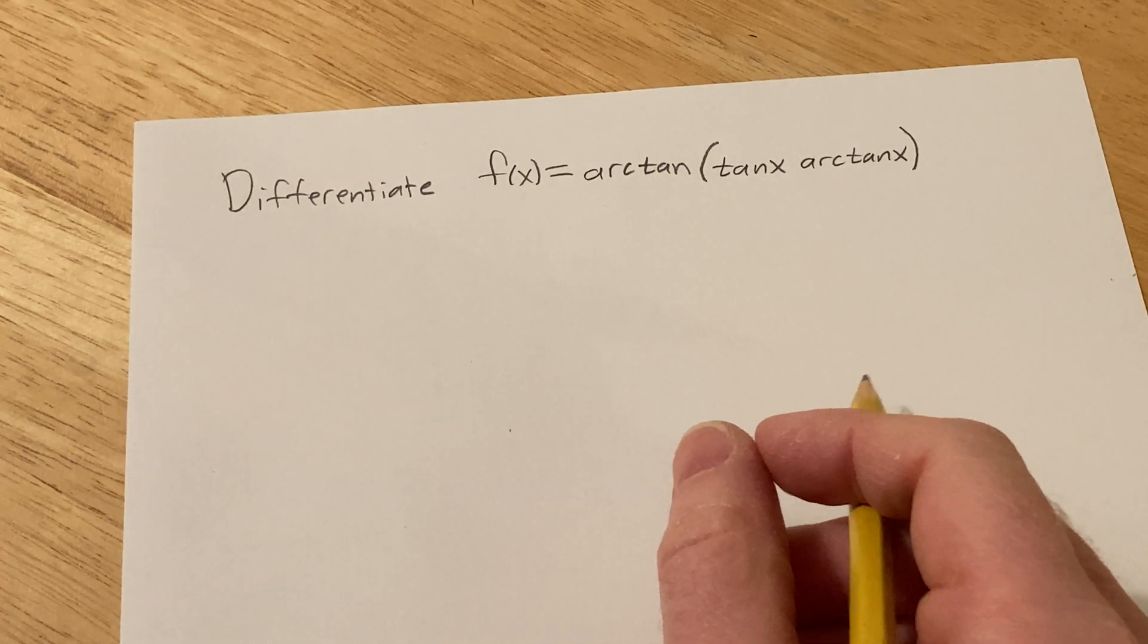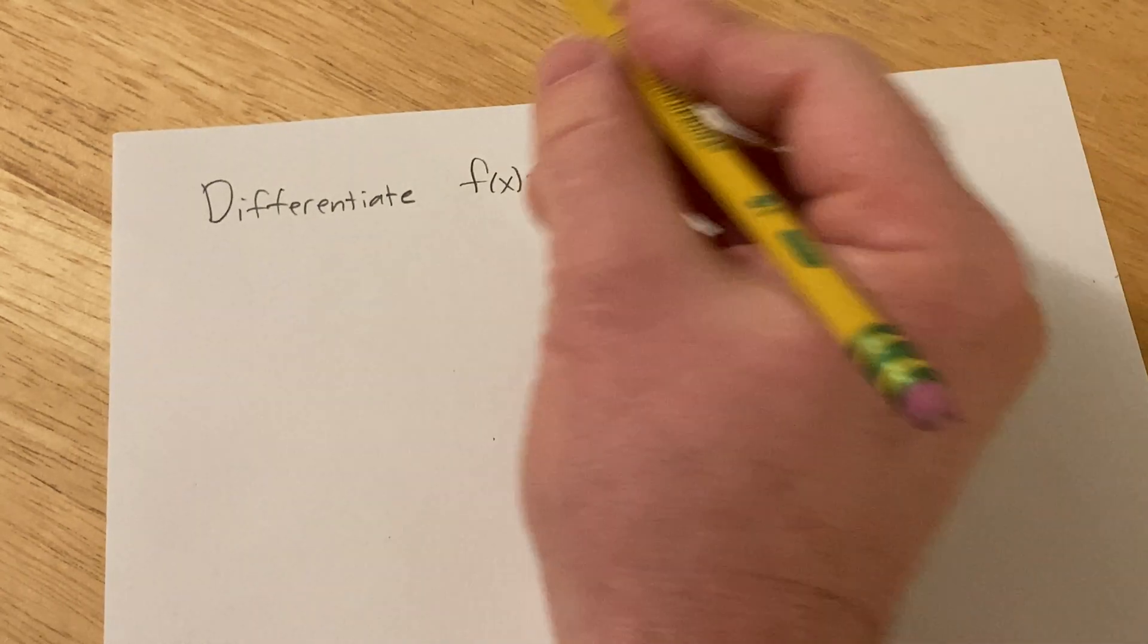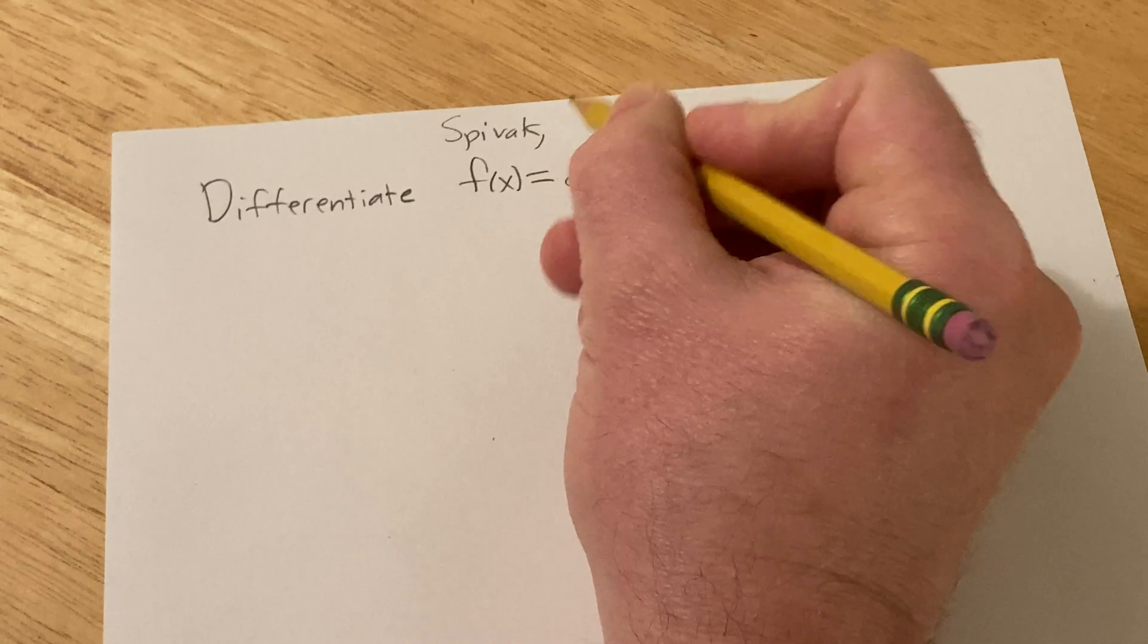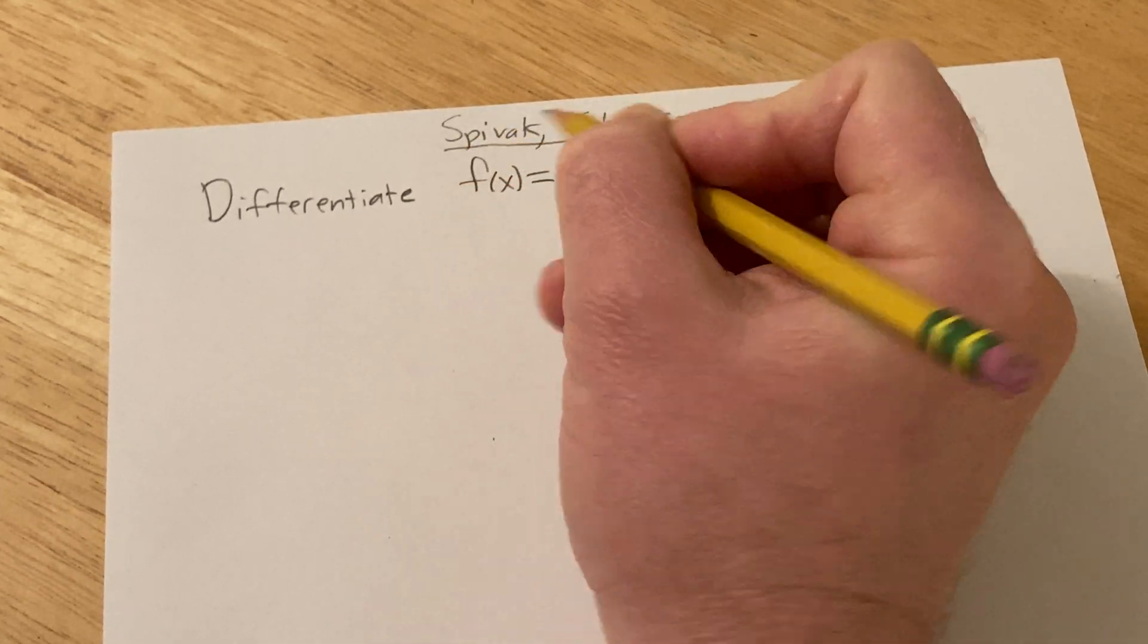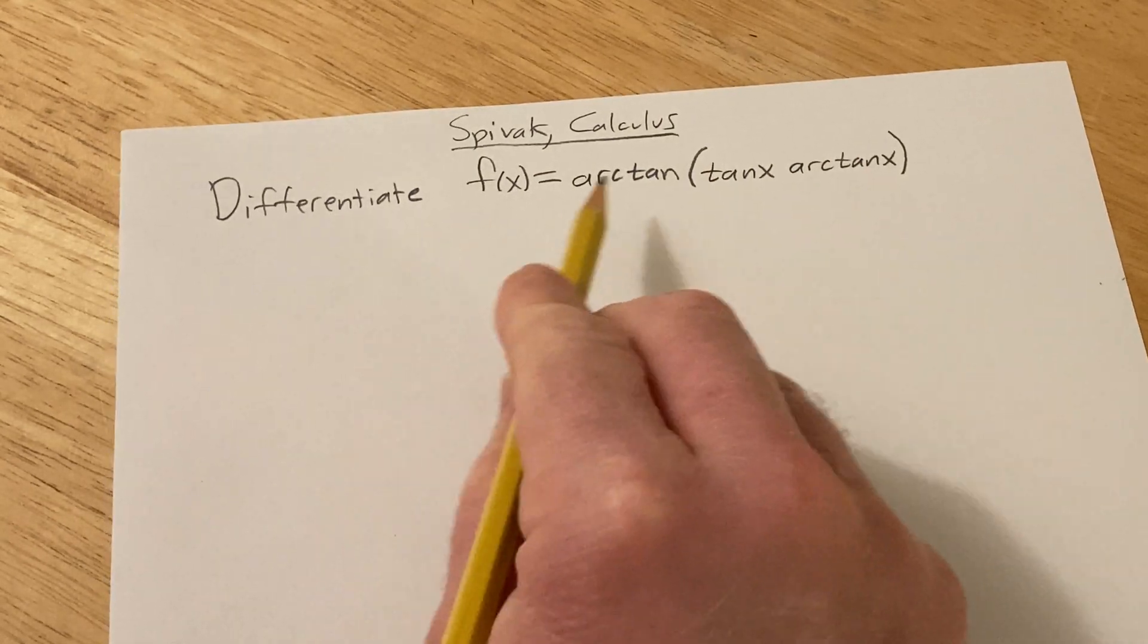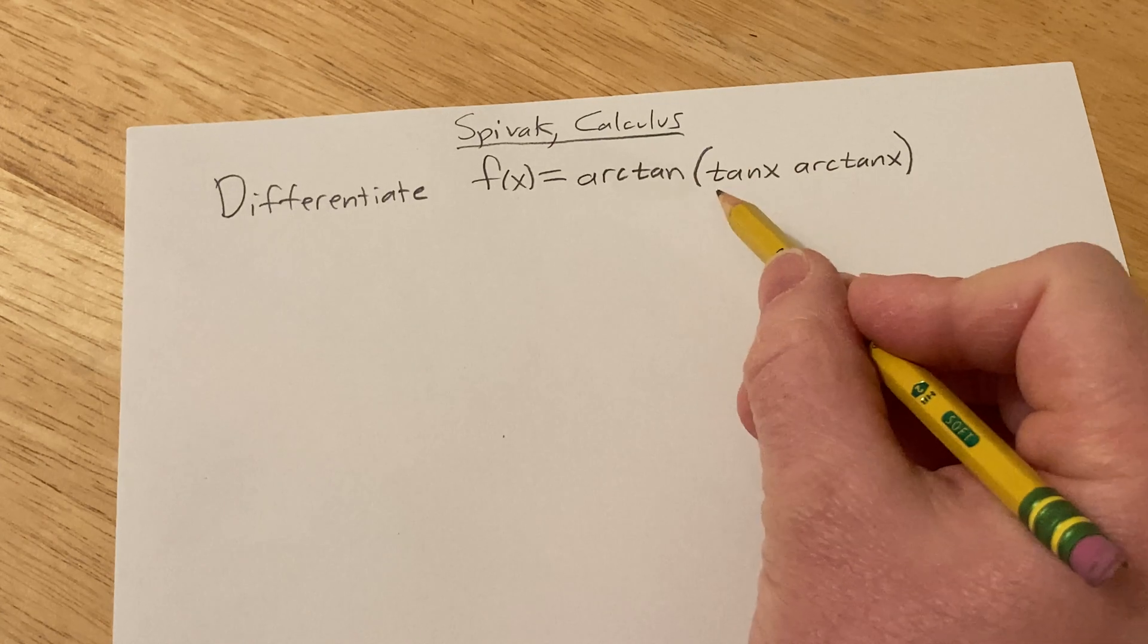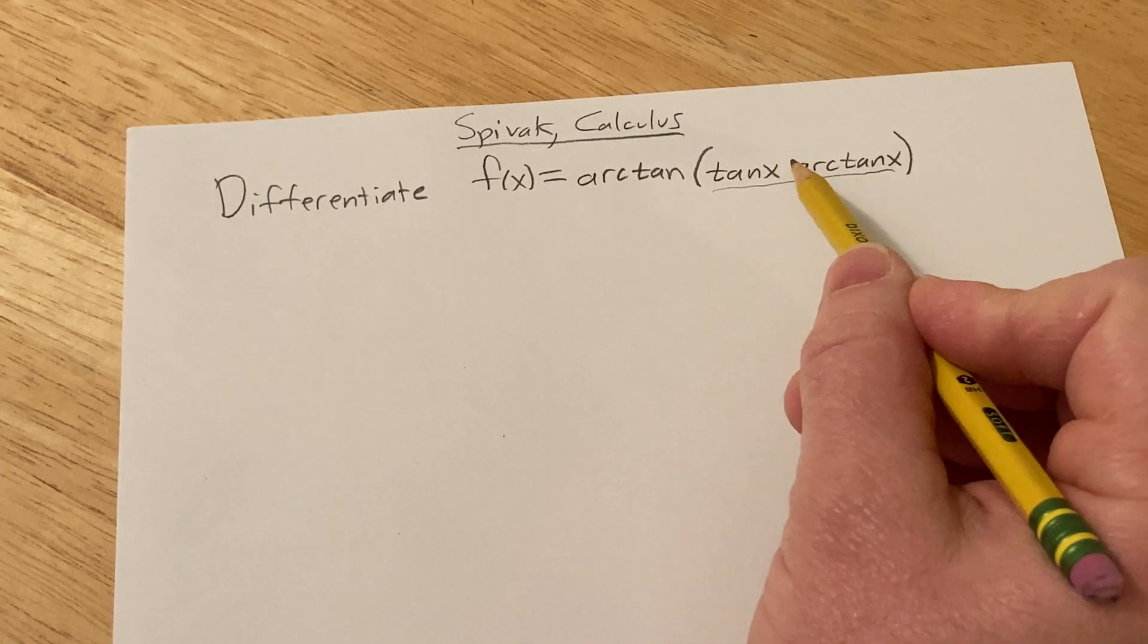Hi, in this problem we're going to find the derivative of this function. So this is just a random problem from a book I have by Michael Spivak and the book is called Calculus. And this is a cool book because it has really cool problems in it and it reads pretty well. Okay, so to do this problem we're going to have to use the chain rule because we have an inside function here and then we're also going to have to use the product rule because we have a product here.